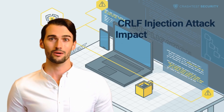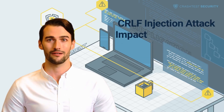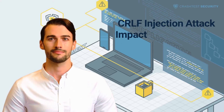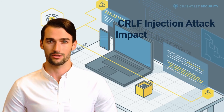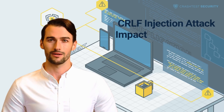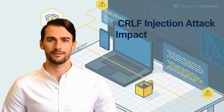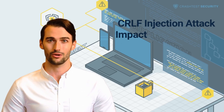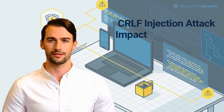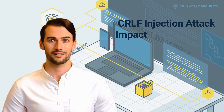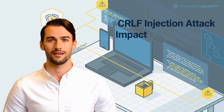Most modern servers are likely not vulnerable to CRLF injections, as administrators have taken the necessary steps to prevent their possibility. However, depending on an application's level of security, the severity of a CRLF injection can range from minor to very serious. A successful CRLF injection can have all the consequences of an XSS attack or cross-site request forgery, such as the disclosure or corruption of sensitive user information. Such an attack can potentially lead to an entire file system being deleted if attackers can gain the necessary access.